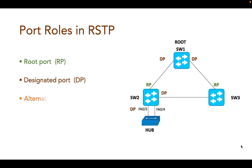Then we have alternate port: a port that replaces a root port when it fails. This is a switch port that offers an alternate path towards the root switch. Then we have backup port: a port that replaces the designated port when it fails. This port comes into picture if you have a scenario where a single switch has two links to the same segment, that is the same collision domain, such as a hub.